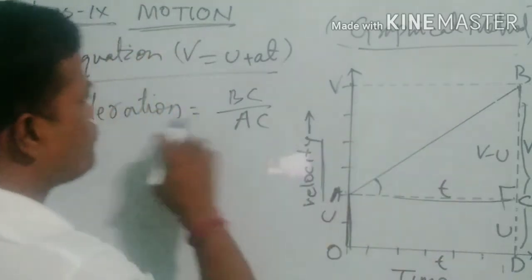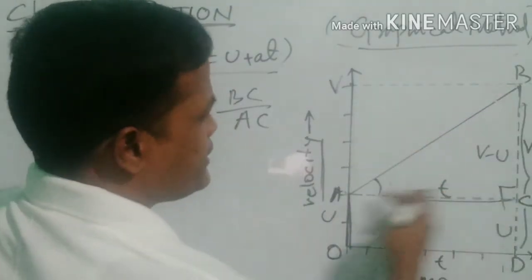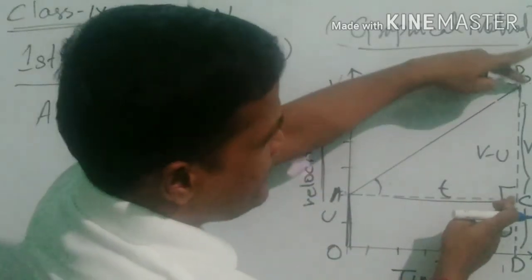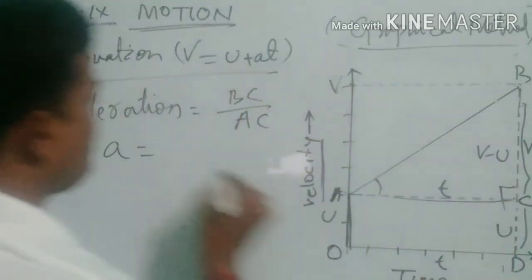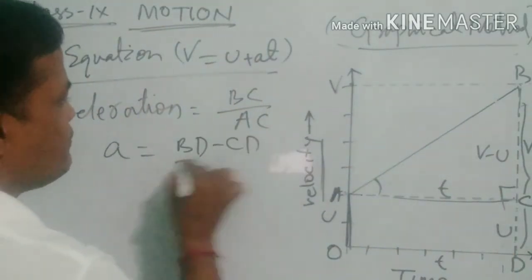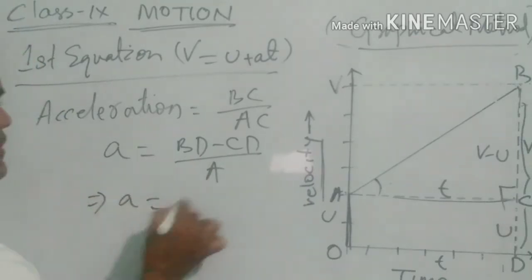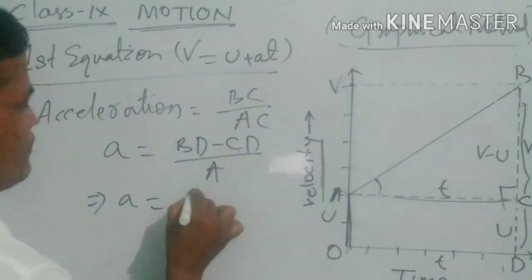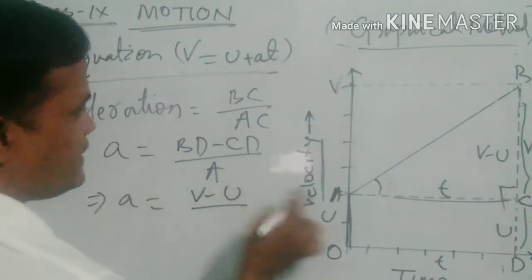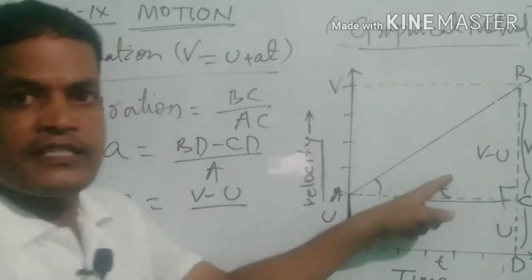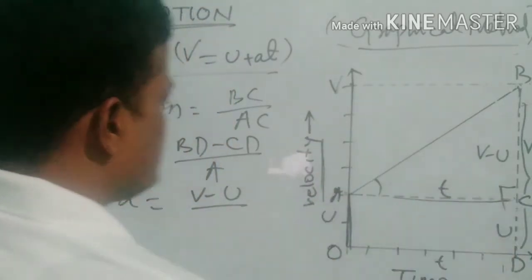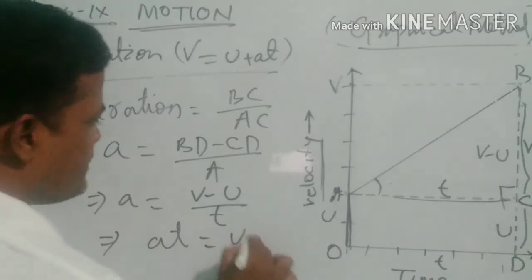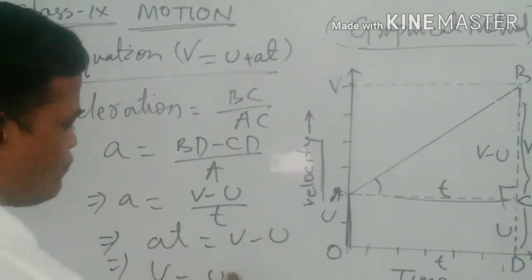This is a right angle triangle. So we need to find BC. BC can be written as BD minus CD. So acceleration A = (BD - CD) / AC. We know that BD = v and CD = u, so A = (v - u) / AC. AC is parallel to the time axis, so AC = t. Therefore A = (v - u) / t. By cross multiplication, AT = v - u, which gives v = u + AT.